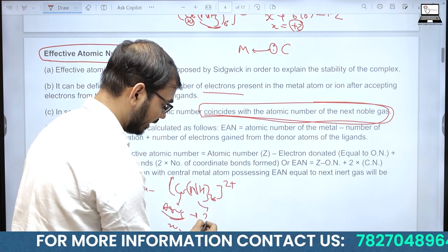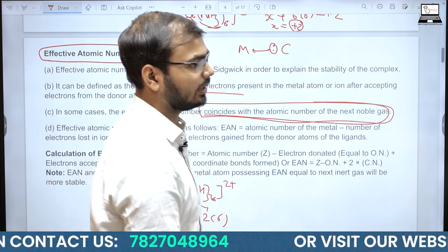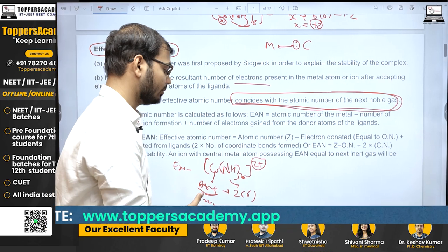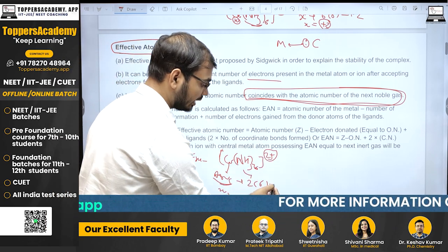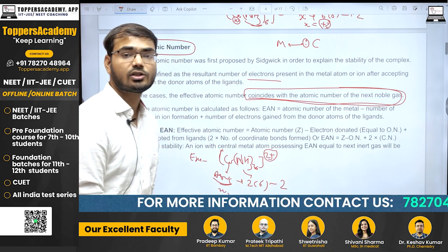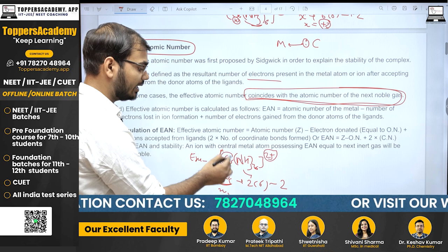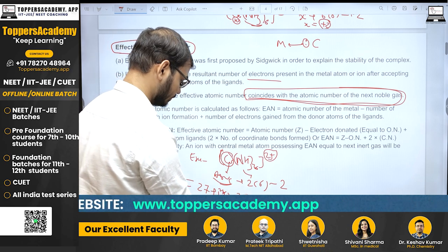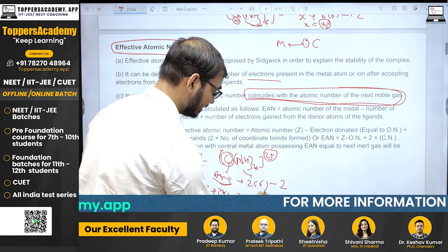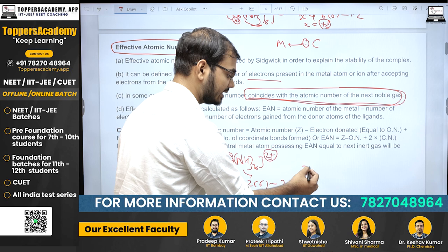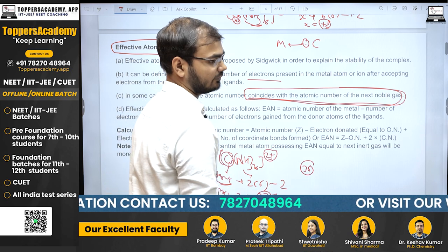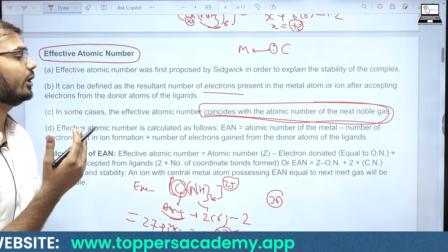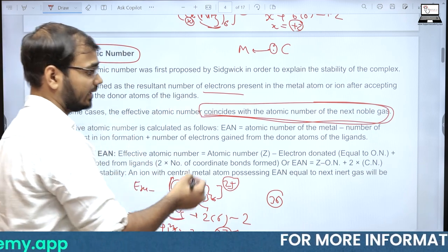Example: [Co(NH3)6]2+ के लिए EAN calculate करना है। Cobalt का atomic number 27 है। Formula: EAN = atomic number of metal − electrons lost + electrons gained from ligands। यहाँ coordination sphere पर +2 charge है, मतलब 2 electrons loose हुए। 6 ligands हैं और हर एक 2 electrons donate करता है (sigma bond के लिए)। EAN = 27 + 12 − 2 = 37। Nearest noble gas 36 (Krypton) है — 37 ≠ 36, इसलिए यह molecule stable नहीं है।